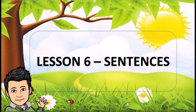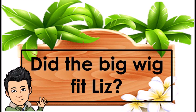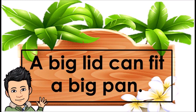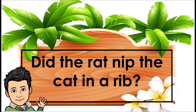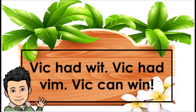Lesson 6. Sentences: Jim had a fat lip. The cap had a rip in it. Did the big wig fit Liz? A big pig did a jig in a pit. A big lid can fit a big pen. A lid can tip. A lid can hit a rim. Did the rat nip the cat in a rib? Did the cat yip? Did the rat zip? Vic had wit. Vic had vim. Vic can win.